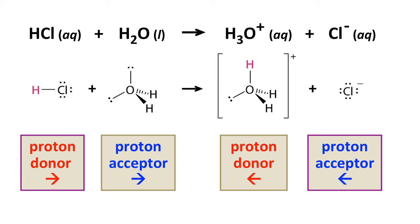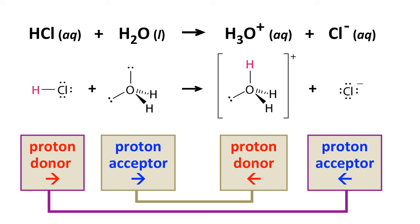We're going to apply this to all kinds of different acid-base processes, including ones that reach equilibrium — that is, not completely product-favored or completely reactant-favored. These are conjugate acid-base pairs.